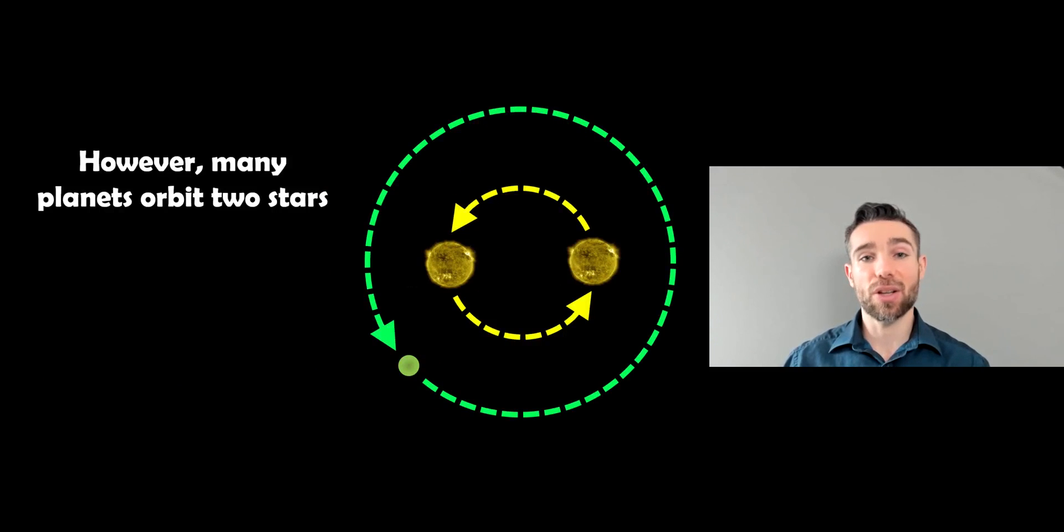Now, many stars are not single in the sense that they are in binary systems, even triple systems, or even up to four, even more. So they're not single stars. And there are planets orbiting these stars in binary systems.